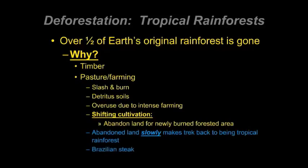Going back to Brazilian steak — over time, Brazilian steak has become a high-demand product. People want it; we see it in places like Fogo de Chão Brazilian steakhouses. People see this as an opportunity to generate income by converting land into something productive. Once again, I = P × A × T, with population, affluence, and technology all playing key roles. There has also been a recent rush for biofuels — ethanol from sugar cane, for example — which can now fuel cars, tractors, and various forms of transportation, adding another driver for why demand for these areas and their resources is so high.